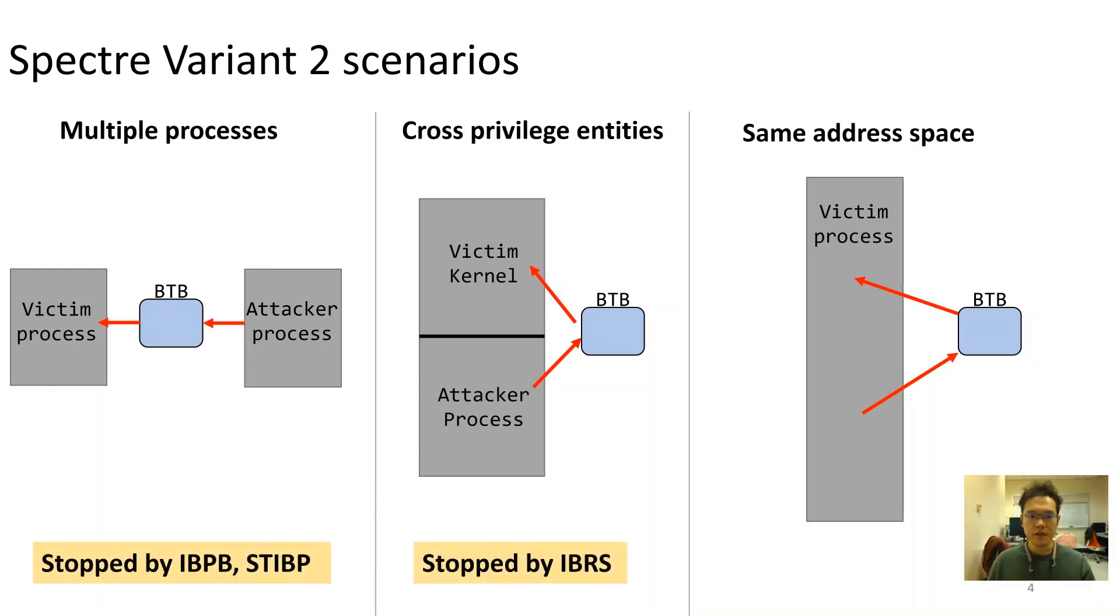Manufacturers provide different mitigations to address the most critical variation of these attacks. For instance, IBPB and STIBP could prevent target injection between different processes, while IBRS by default restricts indirect branch speculation in privileged space. To us, there are still attack surfaces remain open.